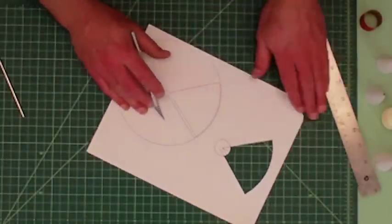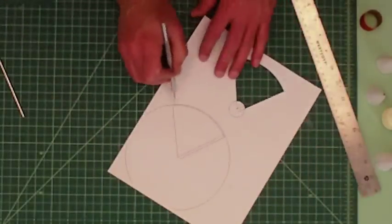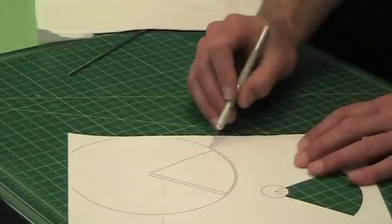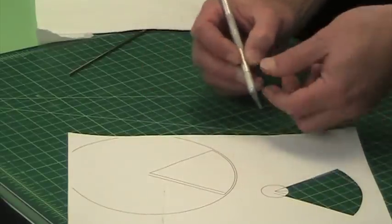Now on this one here, I want to cut along this outside circle. Remember, I said make it about a sixteenth of an inch wider.